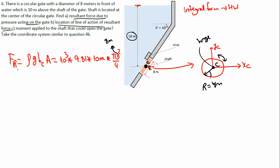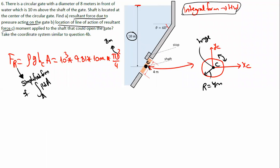As I said in the lecture, the resultant force found by this formula is the simplified form of the integral ∫p·dA over the area. If you want to use the integral form that will be your homework. So we have found Fr - now the question is to find ycp.